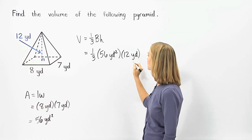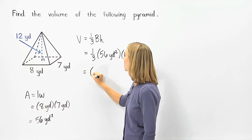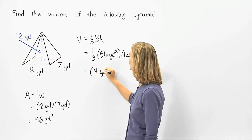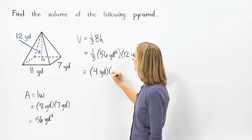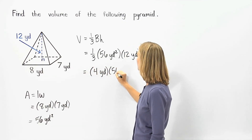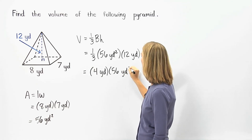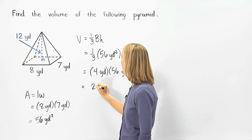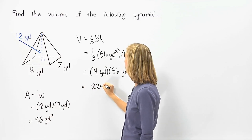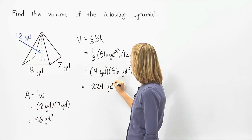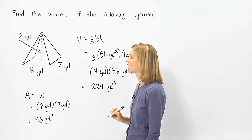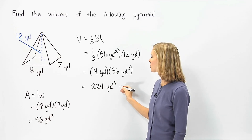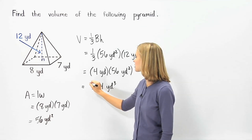One-third times twelve yards is four yards. And we have four yards times fifty-six square yards, which equals two hundred twenty-four yards cubed. So the volume of the given pyramid is two hundred twenty-four cubic yards.